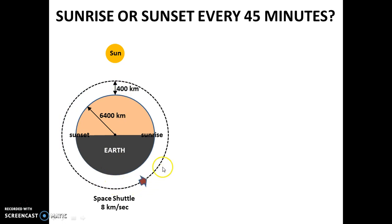Now, every time the space shuttle approaches this point, it is entering into the light of the sun, which is equivalent to a sunrise. Whereas, every time the space shuttle enters towards this point, it is entering into the shadow region, which is equivalent to a sunset.